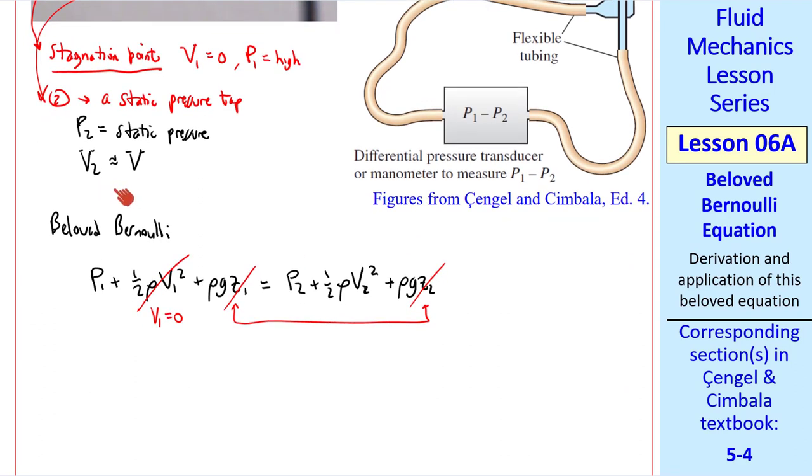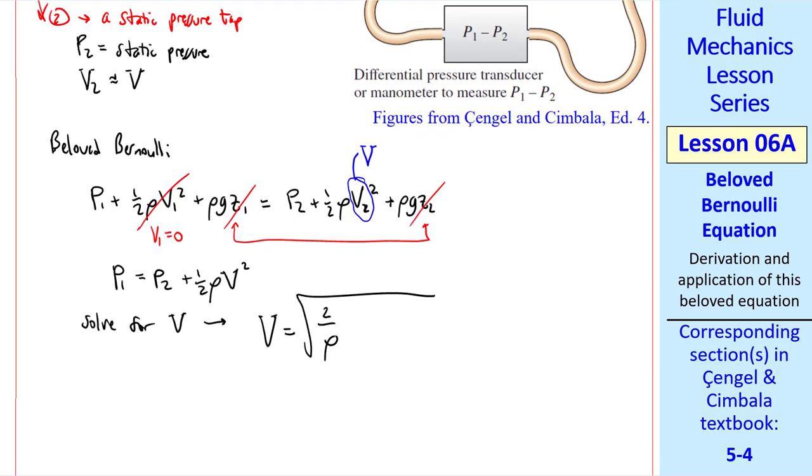So beloved Bernoulli reduces to P1 = P2 + ½ρV², which we can solve for V. V equals the square root of 2 over ρ times P1 minus P2.